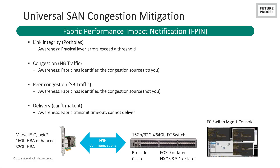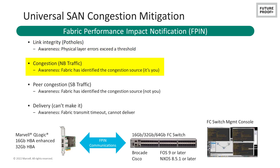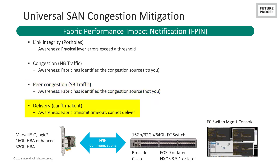FPIN has been implemented in the latest fiber channel hardware to allow switches to notify adapters when issues arise. There are four types of notifications: Link integrity — the physical connection is having issues; Congestion — the HPA port on the specific adapter is creating congestion on the fabric; Peer congestion — there is congestion on the fabric but it's coming from another port; and Delivery — the fabric is timing out and there are delivery issues.